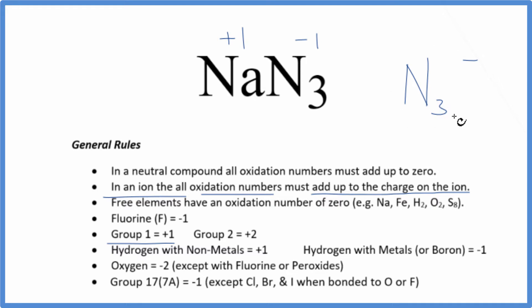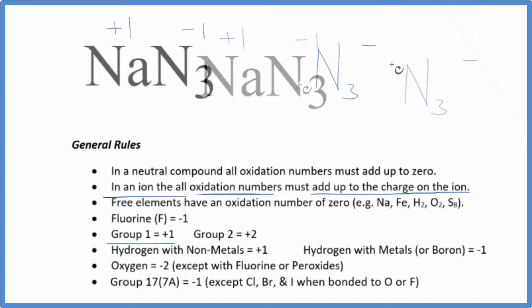So what about this azide ion? How do we figure out the oxidation number on each nitrogen? We could set up an equation. Here's our azide ion, and we know the oxidation numbers add up to the charge on the ion. Let's call each nitrogen x.